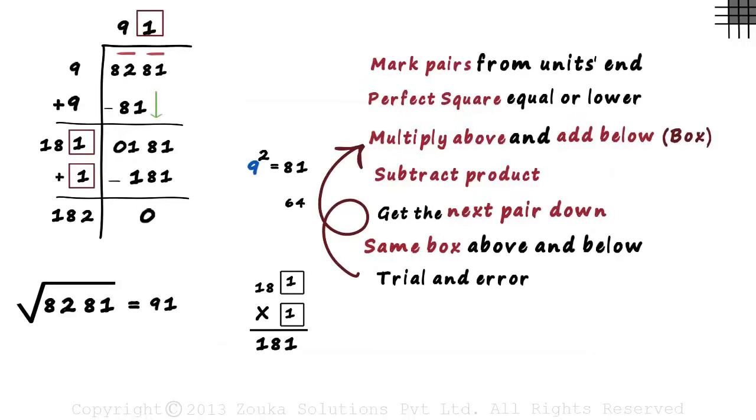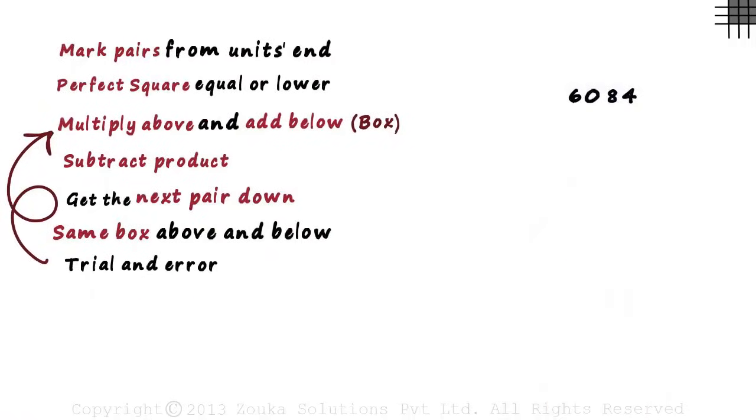This is where we left off in the last video. We followed these steps to get the square root of 8281 as 91. Now let's try solving for the square root of 6084.